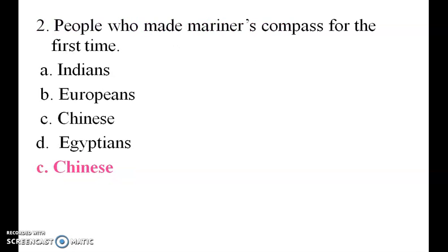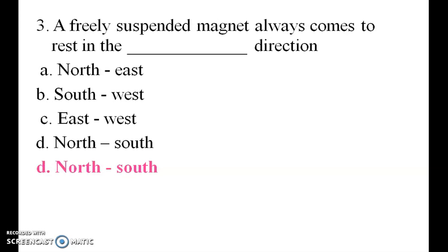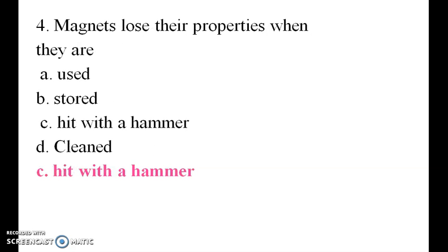People who made the mariner's compass for the first time — it was used by the Chinese. A freely suspended magnet always comes to rest in the north-south direction.